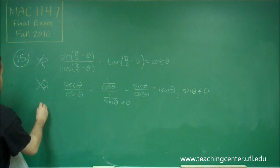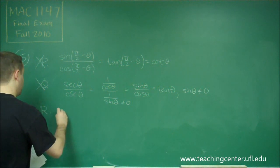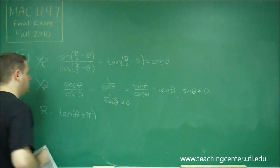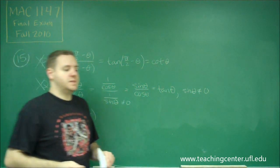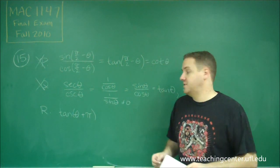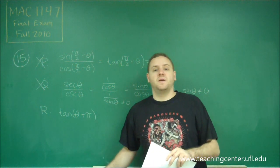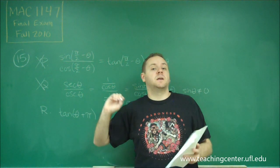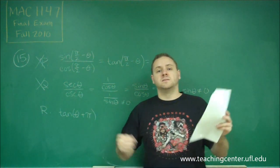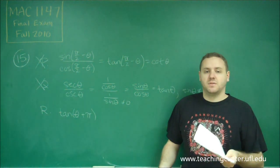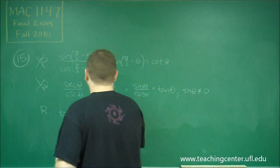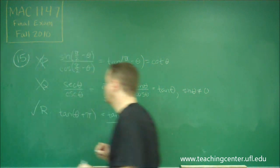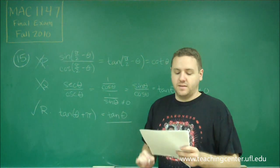Finally, choice R, which says tangent of theta plus pi. This is just testing your knowledge of the graph of tangent of theta. Remember that tangent of theta has a period of pi. So if you're shifting it by pi, you're shifting it by an entire period, which means you got back to the exact same thing. This is definitely equal to tangent theta.